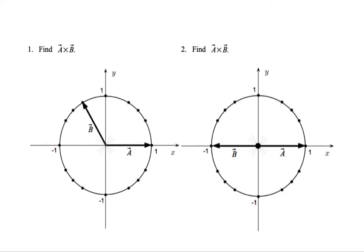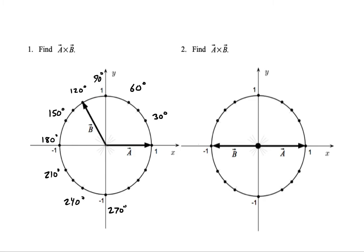These circles are marked every 30 degrees and every 45 degrees. So 30 degrees, 60 degrees, 90, and so on. And then you come back to 0 or 360. And then the 45 would go here. Here we'll have 135, 225, and 315.